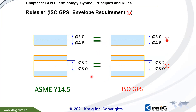Rule No. 1 in ISO GPS is called the envelope requirement. The symbol is circle E. The envelope requirement for ISO GPS is not default — you have to put this symbol behind the size tolerance. In that case, you have an MMC boundary requirement, or Rule No. 1. This is different from ASME, where Rule No. 1 or the envelope requirement is default. But for ISO GPS, Rule No. 1 is not default — you have to put the circle E symbol in order to have the Rule No. 1 requirement.